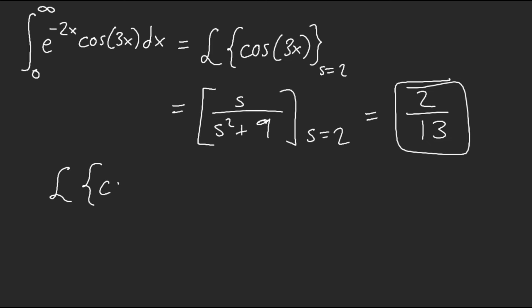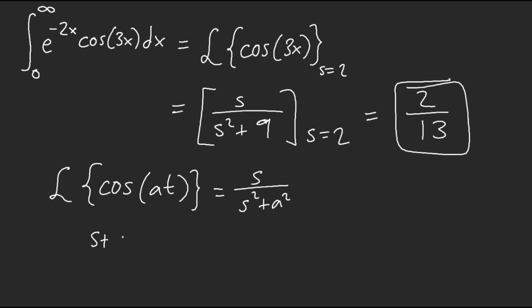The Laplace of cosine(at) is equal to s over s squared plus a squared. That's hard to remember, but remember the complexification with s minus ai — the conjugation gives s squared plus a squared. Cosine is the real part so it has s on top; sine is the imaginary part so it has the constant on top.